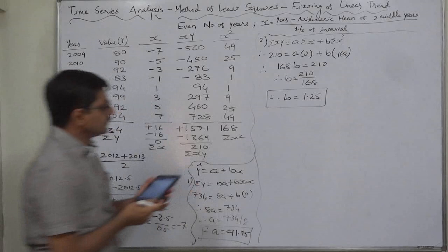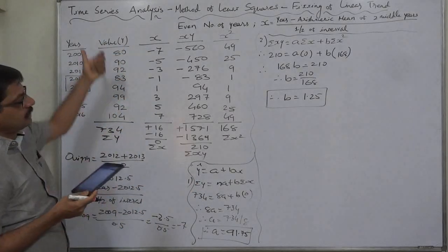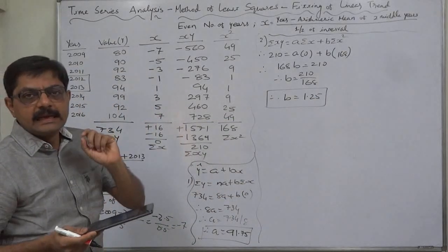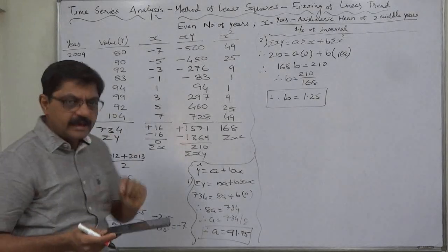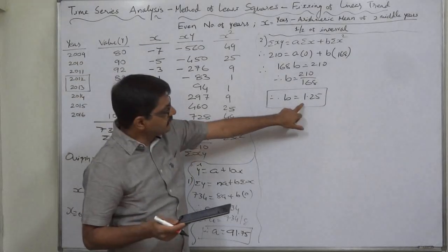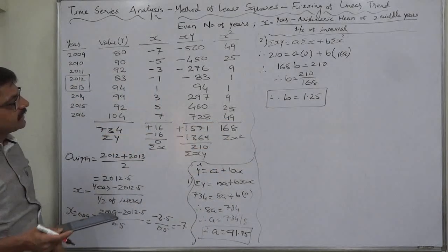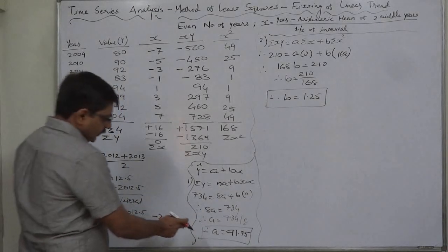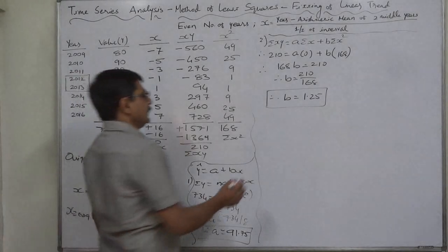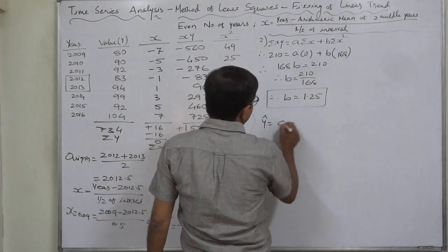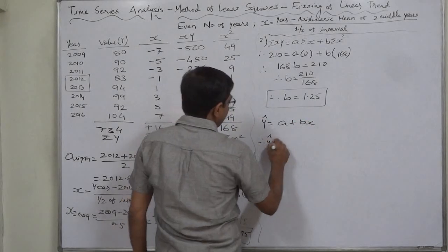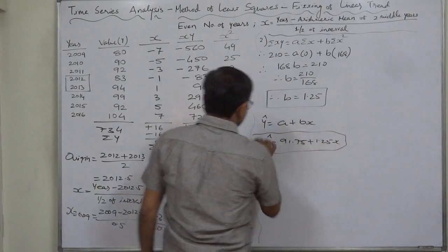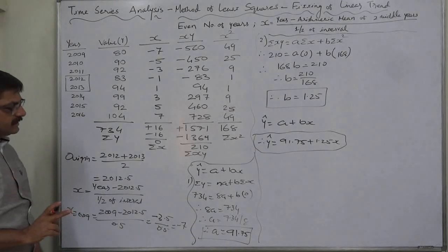B is positive, that means the values increase, and B 1.25 indicates the average rate of, rather, annual rate of change, and change is increase. So every year the value increases by a constant rate of 1.25. But we cannot ignore A. Y is A plus BX, that means Y is 91.75 plus 1.25X in this particular time series.